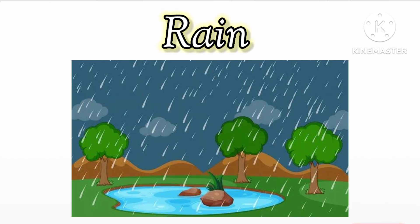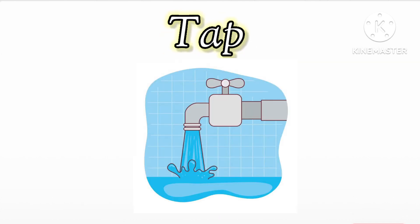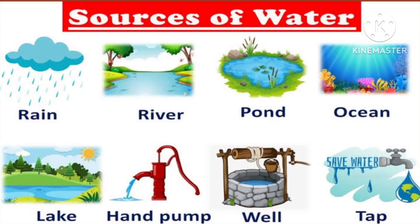The main source of water is rain. If there is no rain, we will not get water — the rain water gets collected and we use it. At home, we get water from all these sources through pipelines and tap.